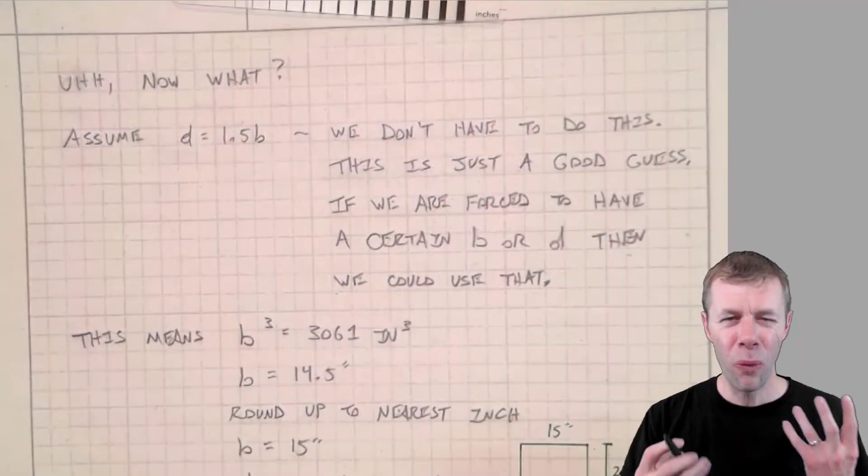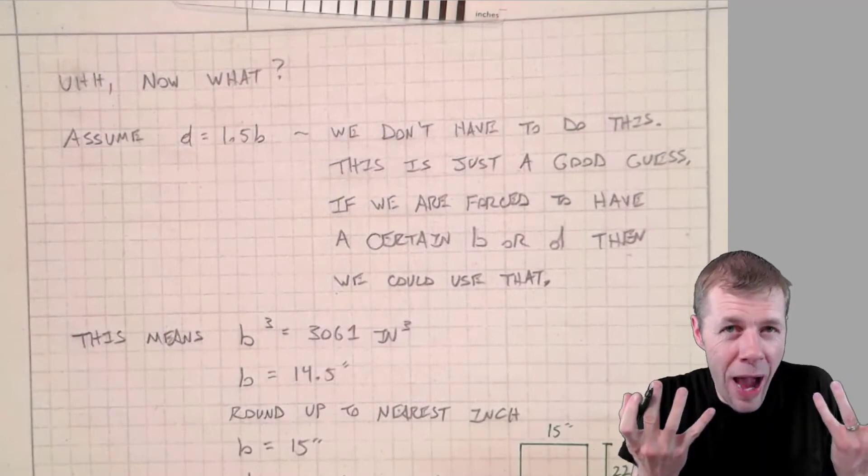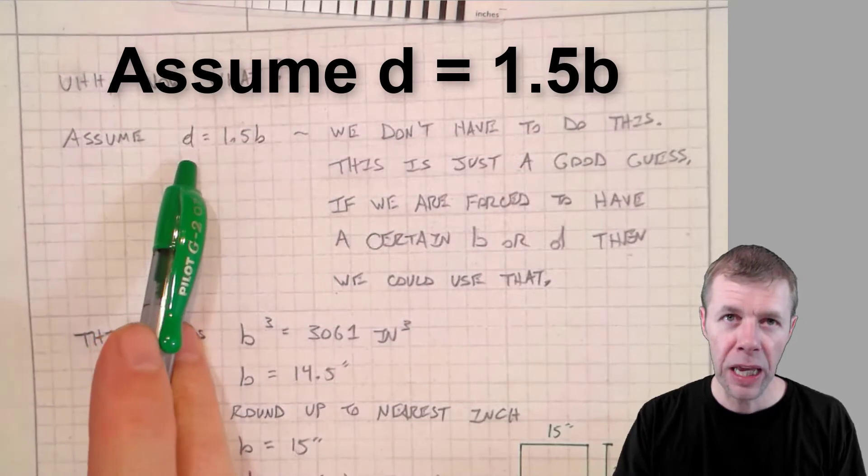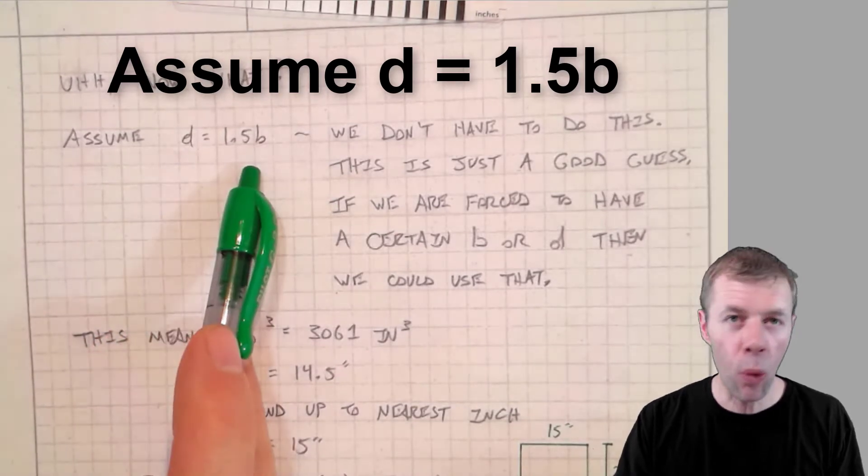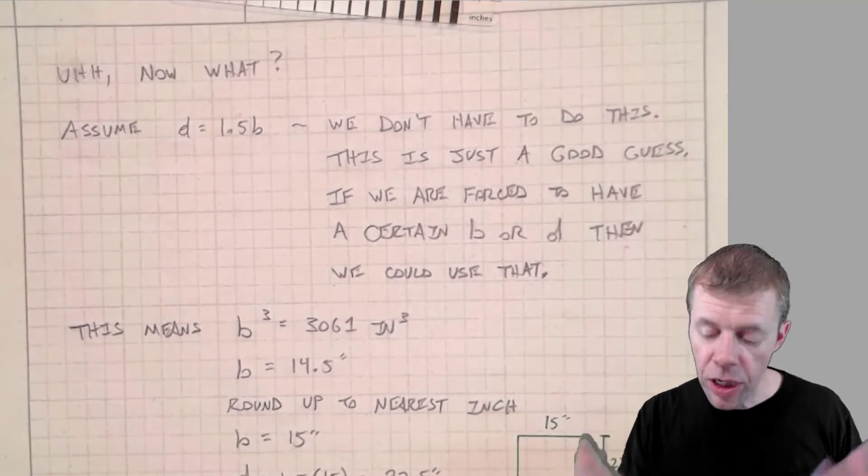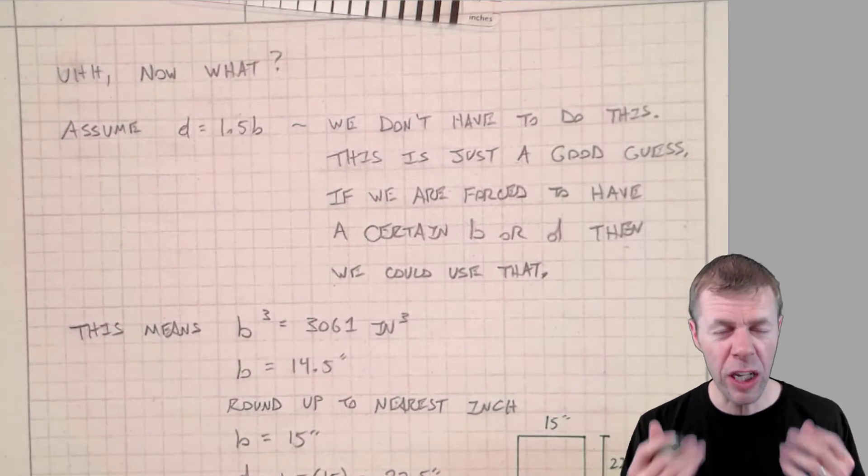What do we do now? We've got this BD squared number. We're going to assume that our D is equal to 1.5B. We don't have to do this. We could pick all kinds of other different numbers, but I'll tell you, I'm going to be like Yelp for Reinforced Concrete.